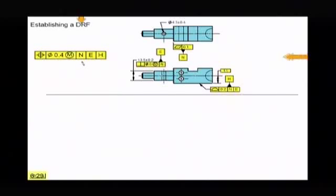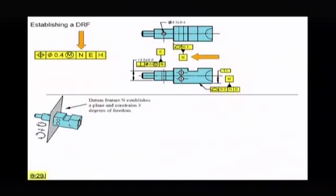But N, N is the primary datum. And let's see what that is. That is a face. So a plane surface. So that's going to stop one translation. It's going to stop two rotations. You can see the rotation in this direction and this direction.